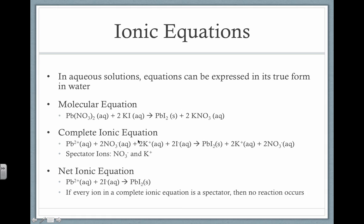We can express it using a complete ionic equation. Anything that's aqueous will dissociate into positive and negative ions — anything with an AQ label. Anything that's solid, liquid, or gas, like PbI2, you cannot separate, because it's not in solution. In the complete ionic equation, you'll notice some ions appear on both sides — these are spectator ions, like nitrate and potassium. We can eliminate spectators to get a net ionic equation, which is a third way to express a reaction showing only what actually changed.